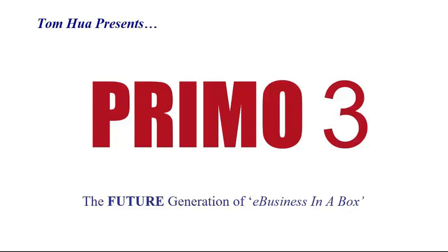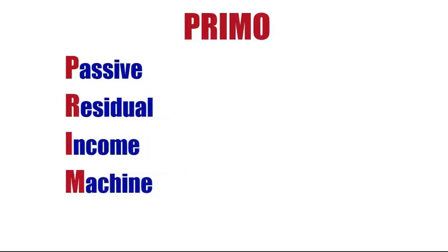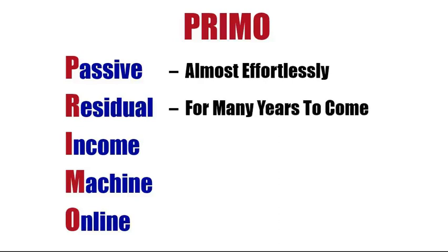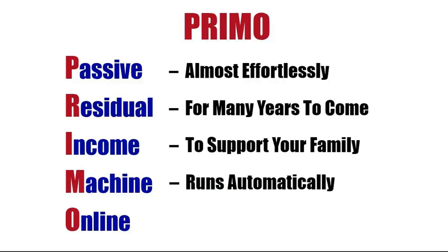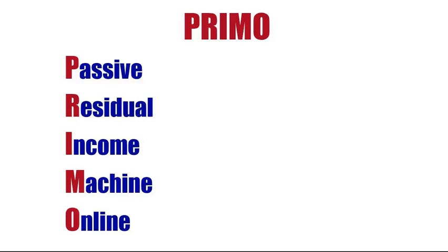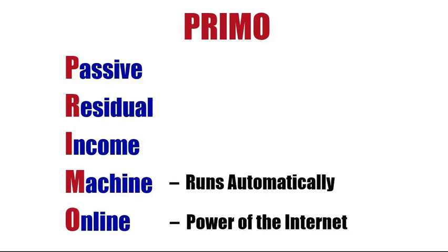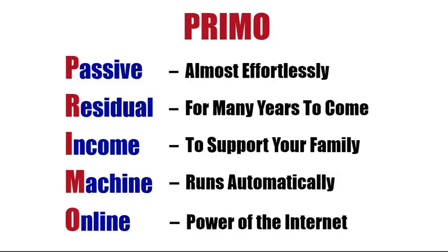The presentation is titled Primo 3. PRIMO — let me explain. P stands for Passive, R for Residual, I for Income, M for Machine, O for Online. Passive means almost effortlessly. Residual means for many years to come. Income means the money to support yourself and your family. Machine means something you set up once and it runs automatically. Online means using the power of the internet. So today you're going to learn how to build something that runs automatically and earns money for you and your family for many years to come, almost effortlessly.